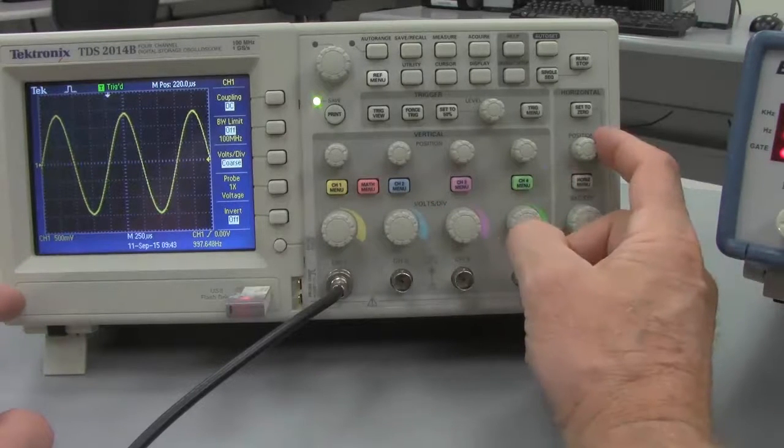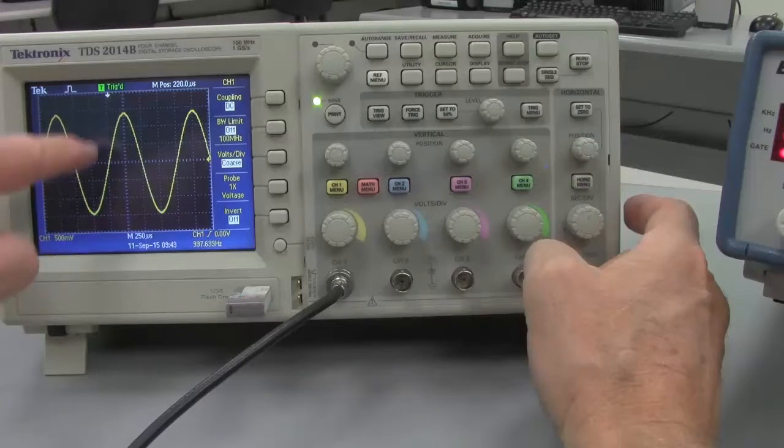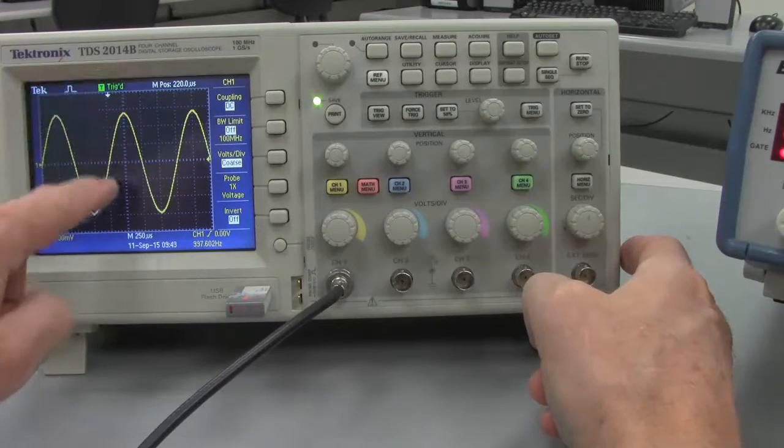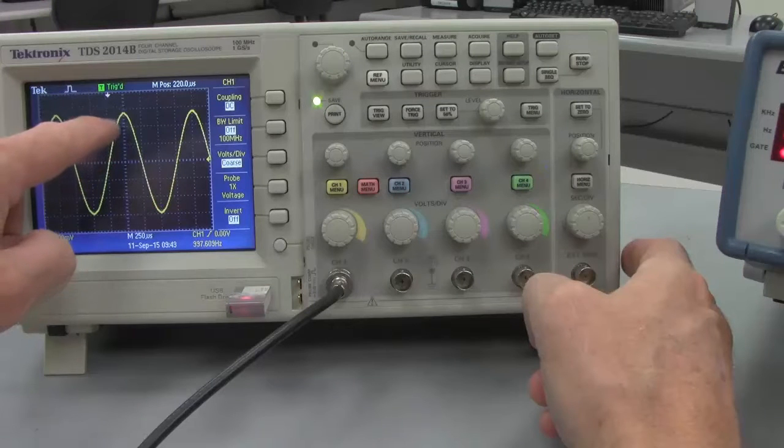Once again, line it up. That gives us a little bit more swing, and so we can now say that the amplitude of this new signal is one major division, two major divisions.